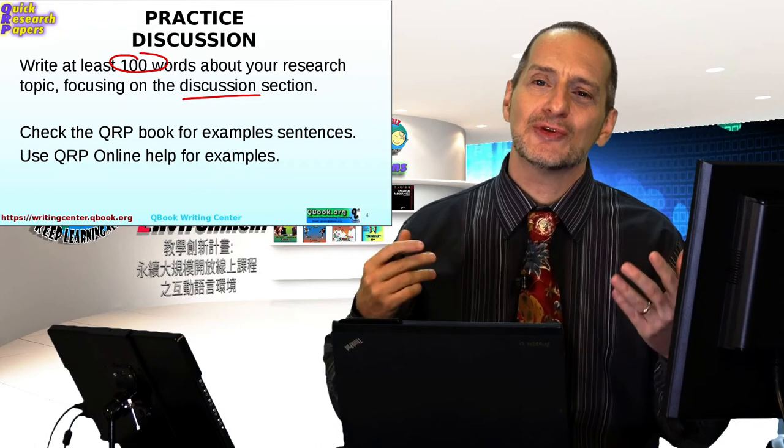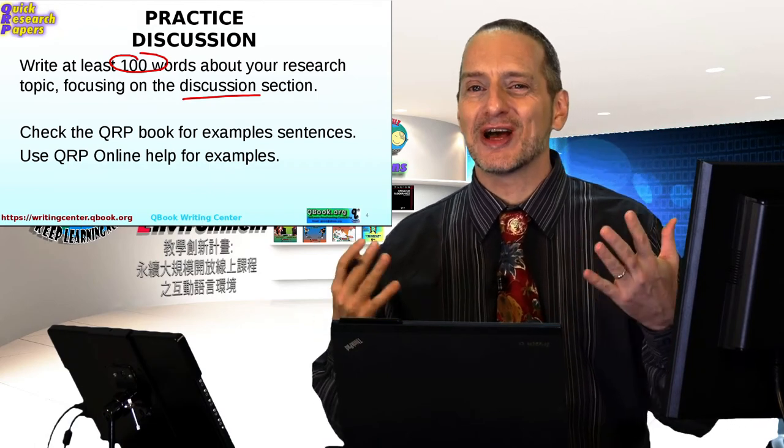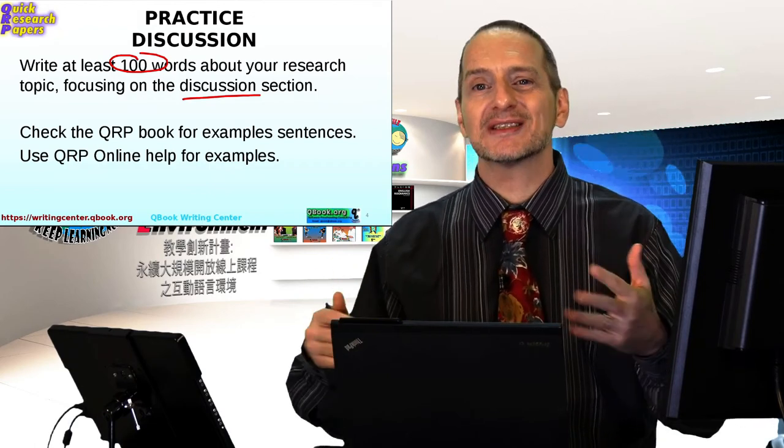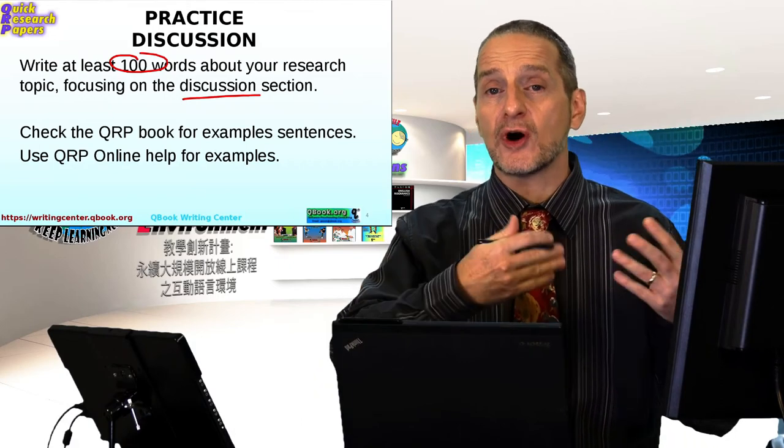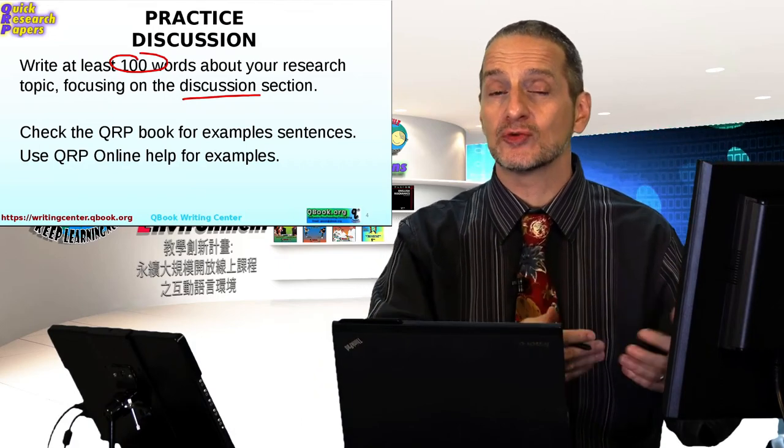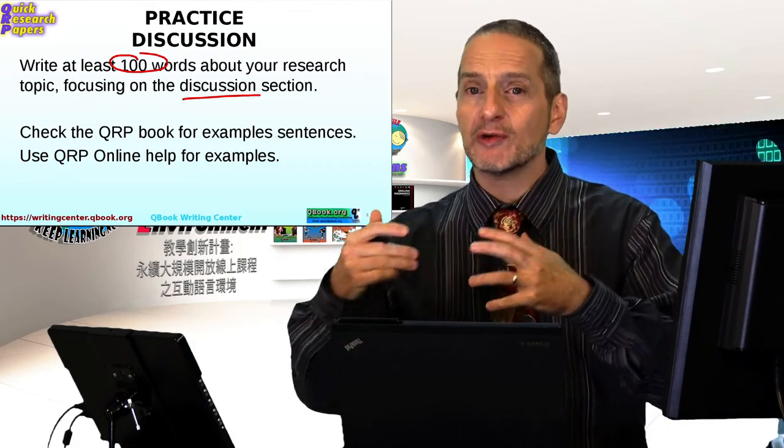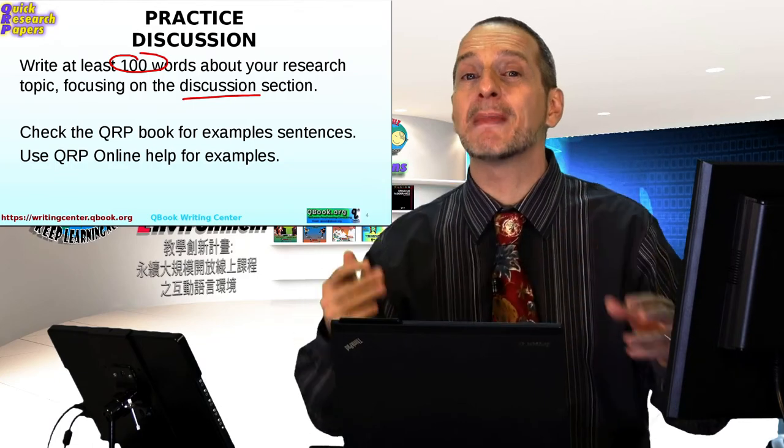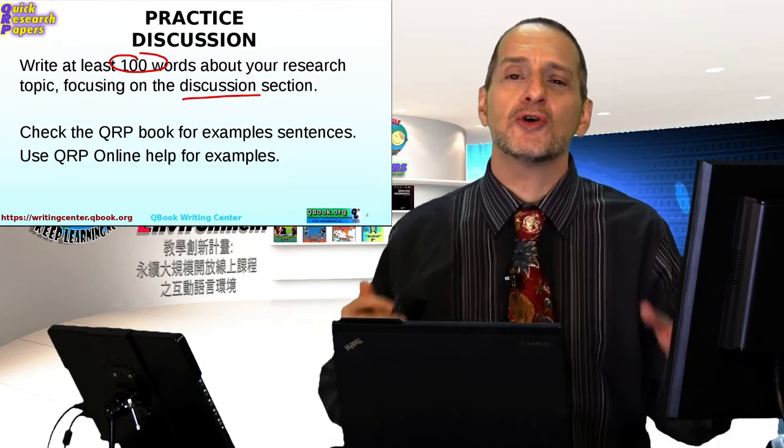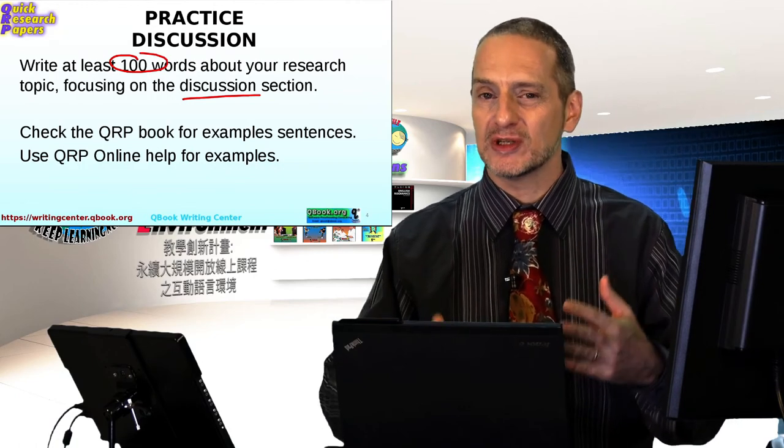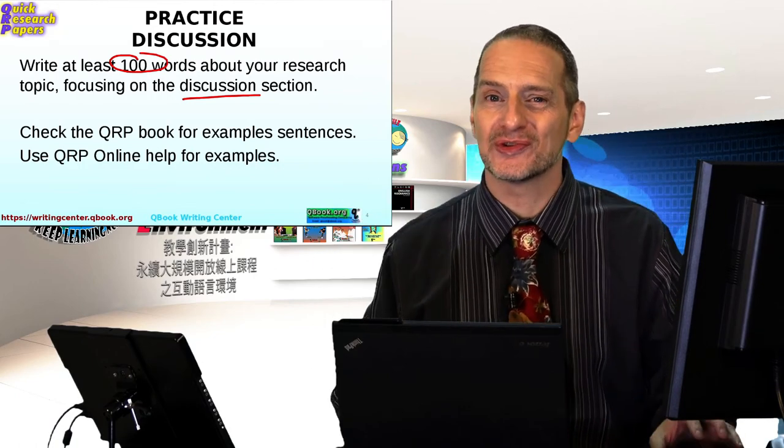After you get a good topic, go ahead and think about it, and then think what the discussion could be. Now, of course, if you don't really have research, how can you have a discussion? Well, try your best to make it up or to follow something you can find on Google Scholar and try to rewrite it to be a little bit different to what you imagined it would be.